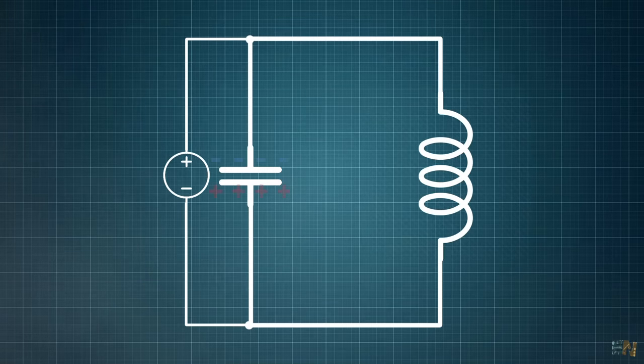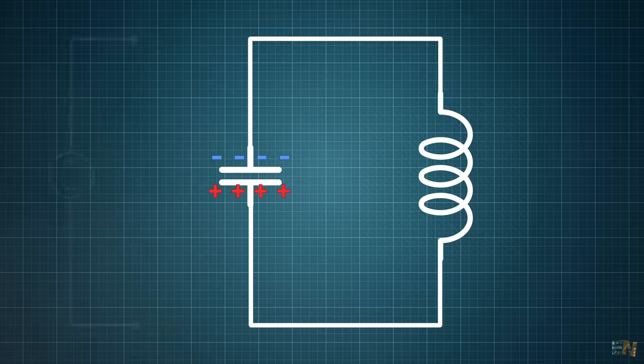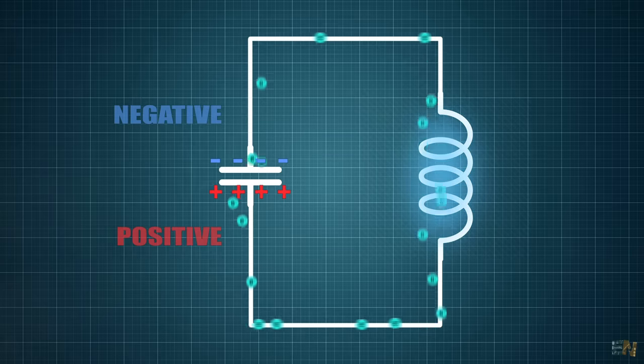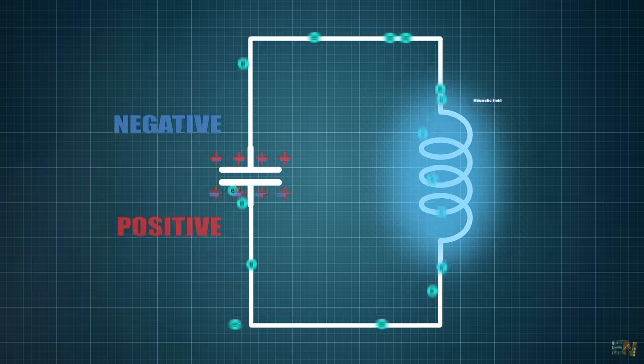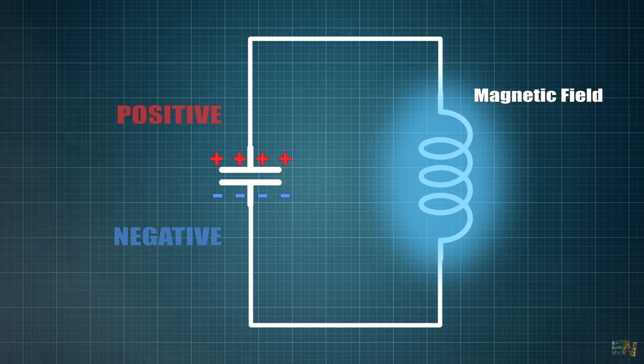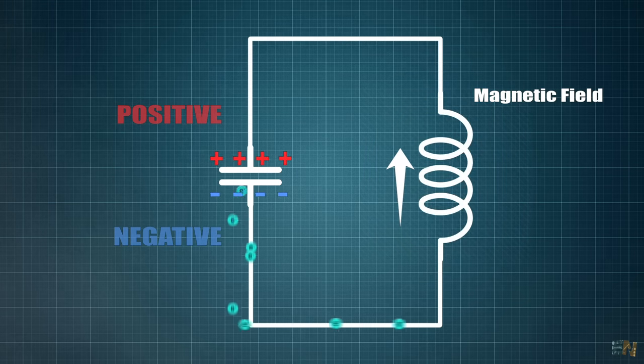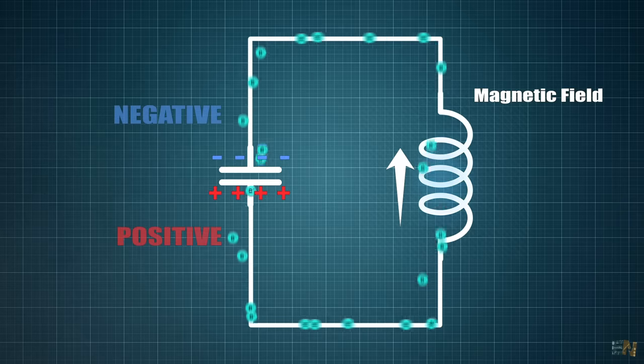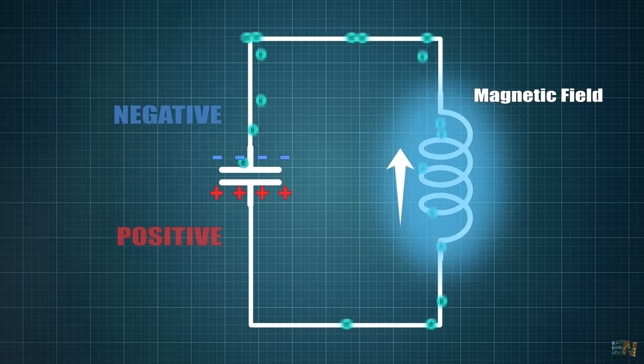When we start, the capacitor is fully charged and we have no current flow. We remove the power supply. The charge will start flowing through the coil from one side to the other side, attracted by the positive side. As we all know this current flow will create a magnetic field around the coil. When the current flow is over, this magnetic field can't keep any more and it will collapse.